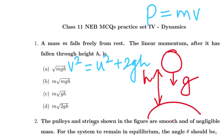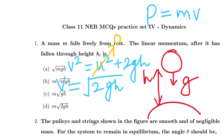Since the body starts from rest, u equals 0. So we have v² equals 2gh, therefore v equals √(2gh). Now we have the formula of momentum: P equals m√(2gh).